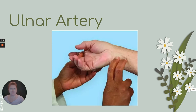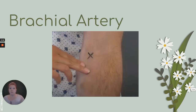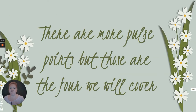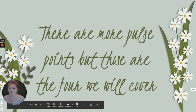And then the brachial artery — here's my arm, literally in my elbow. That's the one used when a doctor or nurse measures your blood pressure; you put the stethoscope right there on the brachial artery. There are a lot more pulse points, but these are the four we're going to cover and that I'll ask you to remember. So there you have it — all about pulse.